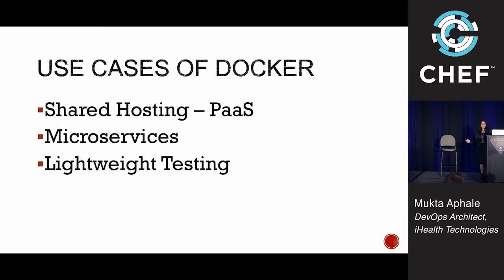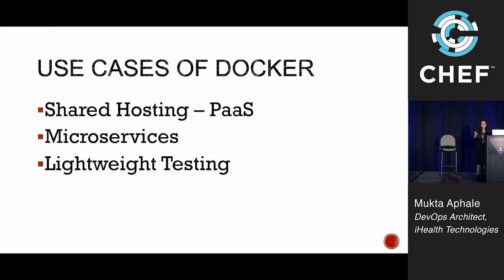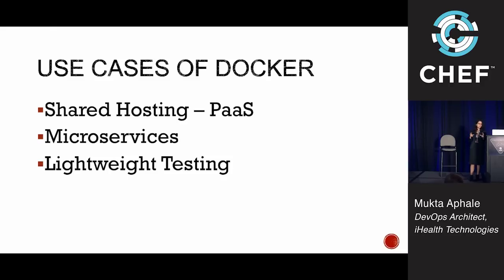Docker finds its applications in privately shared hosting or PaaS applications. Many internet search providers, hosted applications, even Travis CI — they all use Docker. It's used for infrastructure virtualization and application isolation, in places where they want isolation and speed. For microservices — an architecture where you've broken down your application into small services which run independently but depend on each other — you can have a Docker container running each particular service, and these services talk to each other.